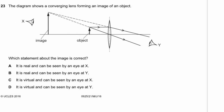Question 23. A converging lens forms an image. The image is on the same side as the object, is larger, and cannot be projected — it is a virtual image. It can be seen by the eye when the eye is located at Y. Answer D.